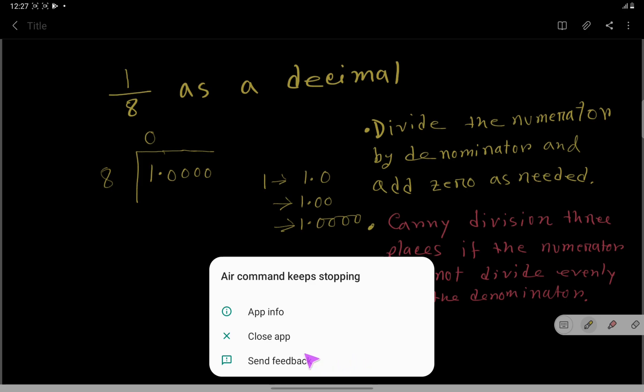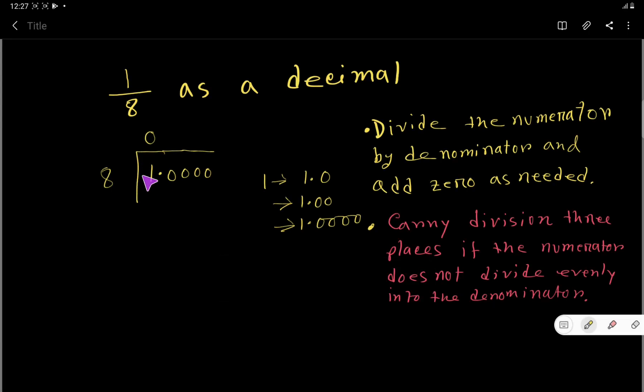8 goes into 1—it doesn't go into 1. That is, you can write 8 goes into 1 zero times. So 0 times 8 is 0. If you subtract, you will get 1. Now bring down this 0. Look, before 0 we have a decimal point. The decimal point always comes to the top.